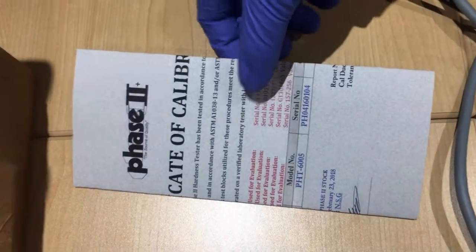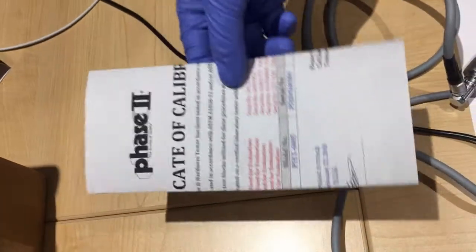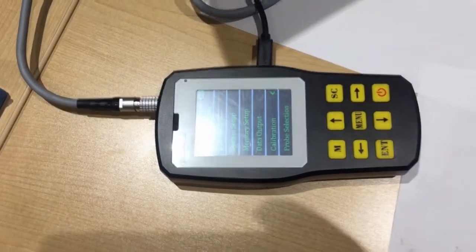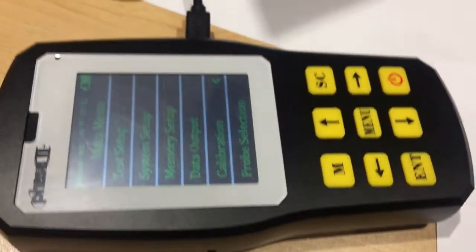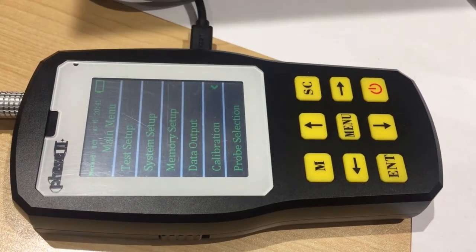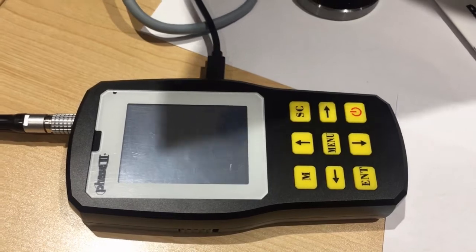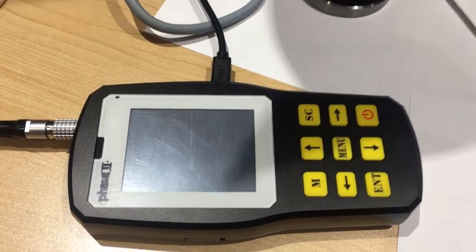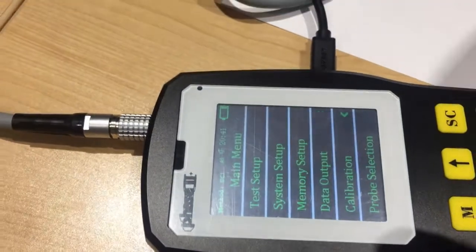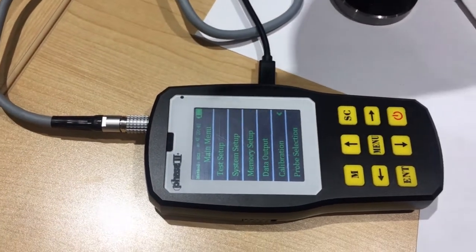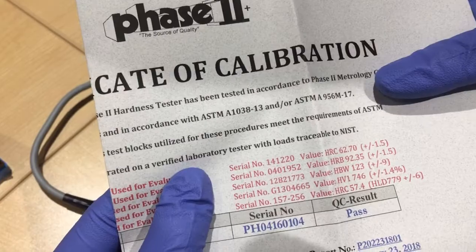Here is the calibration. For calibration, there is a certificate certified by Phase II Plus, and it comes out with your instruction manual. Here it is. As shown in our case, this machine is calibrated at February 23rd, 2018. And in accordance with ASTM A1038-13 and ASTM A956M17, which shows here. That's what the factory set up for us.